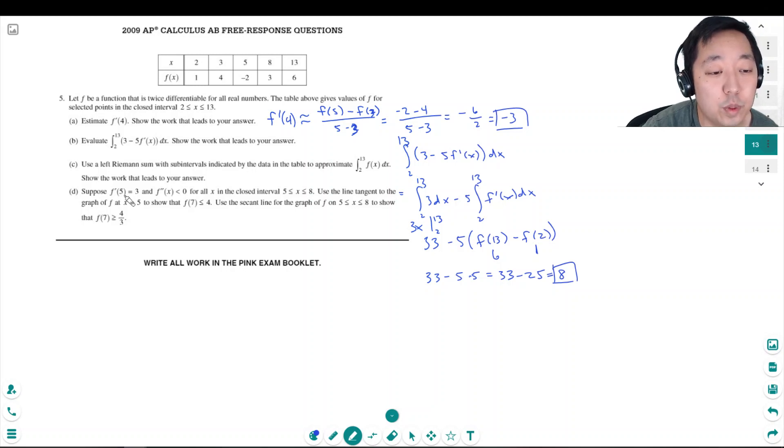Suppose f prime of 5 equals 3 and f double prime of x is less than 0 for all x in the closed interval between 5 and 8. Use the tangent line at the graph at x equals 5 to show that f of 7 is less than or equal to 4. Let's do this first part.